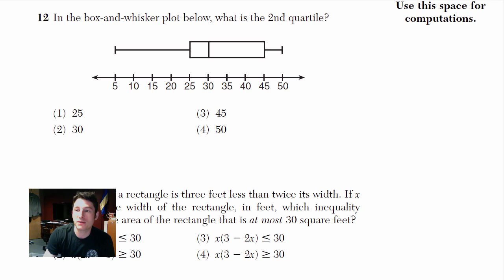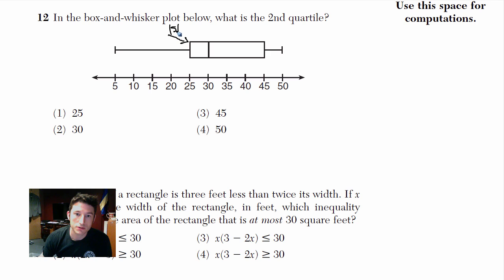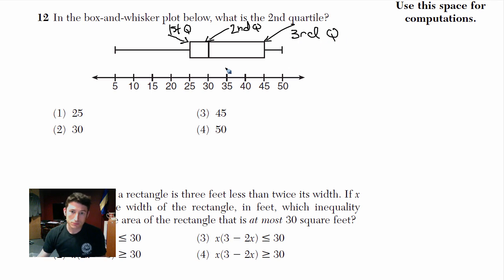There's a way for figuring it out and I could do a future video on it, but when they give you a visual representation and a graph, all you've got to know is: that first line is the first quartile, that second line is the second quartile, and that third line is the third quartile. Just look at the box.